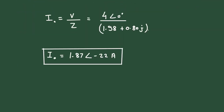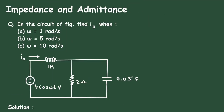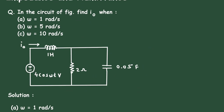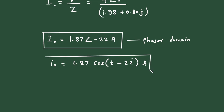We obtained IO in the phasor domain. Converting to time domain: IO = 1.87 cos(1t − 22°) amperes. This is the final answer for omega equal to 1 radian per second.